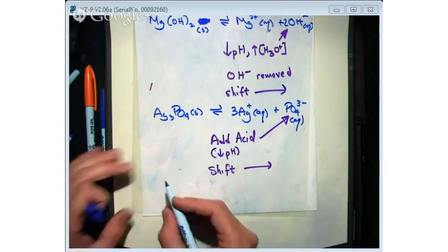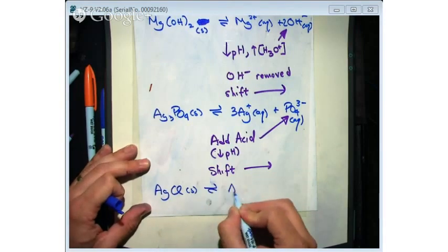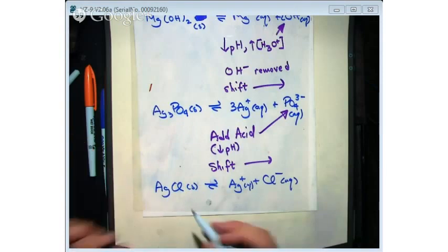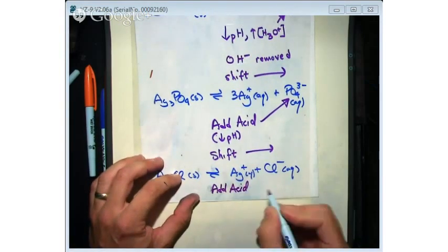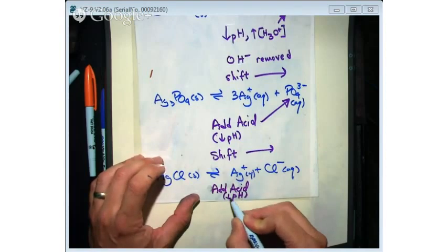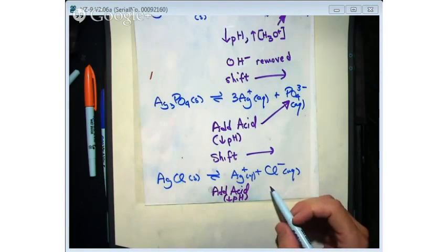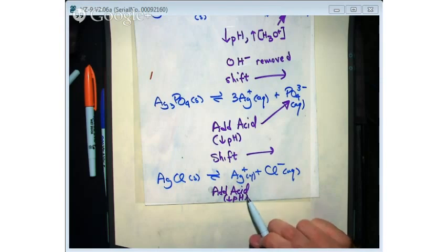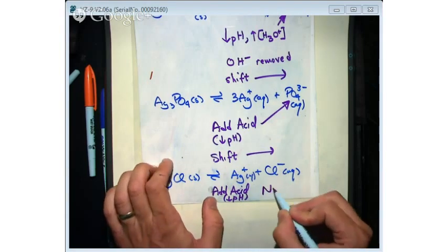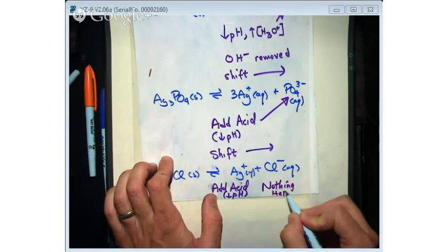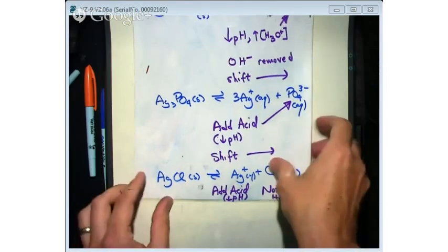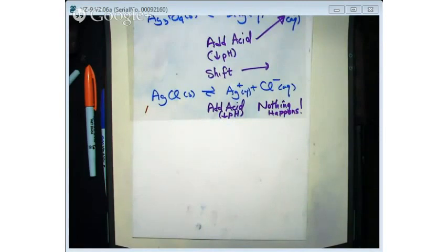Let's try one more. AGCl solid goes to AG+ aqueous plus Cl- aqueous. What happens now if I add an acid or lower the pH? Does this react with Cl-? What is Cl-? It's a conjugate of HCl. And so what is this, acid, base, or neutral? It's neutral. So a neutral won't react with an acid. In this case, nothing happens because that anion is not a base. So there's no shift. In this situation, nothing will occur.